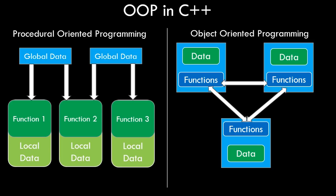On the left hand side you can see we have certain global data — say integer variables or variables we've created inside our program — and we've created a bunch of functions. Inside those functions we have certain local variables scoped to that function, but function one and function two both can access global data on the left, and function two and three can access global data on the right. In real world scenarios where data is crucial, like a bank account management system, you do not want any unrestricted access to that data.